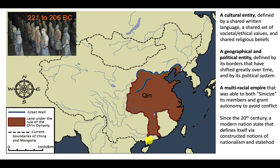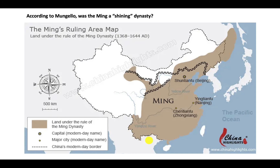China can also be thought of as a multiracial empire that united many different ethnic groups, united by their adherence to certain societal values and the written language — going back to that first definition of cultural entity. Since the 20th century, we usually think of China as a modern nation-state that defines itself via constructed notions of nationalism and statehood. The term China is somewhat more complicated and less stable than it appears, and something that has changed over time.